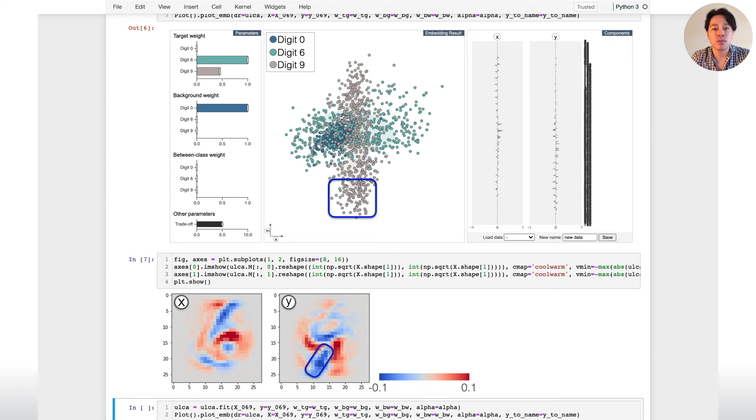For example, we can expect points of digit 9 placed at the bottom in the embedding space are written with a diagonal stroke. Similarly, we can expect these points in the red rectangle are written with a vertical stroke.